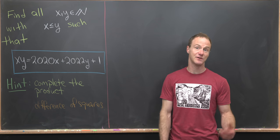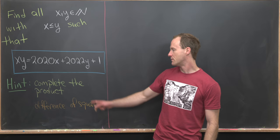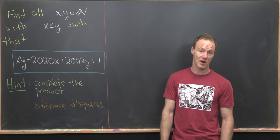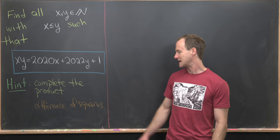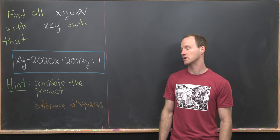Now, I've got a couple hints if you guys want to give this a go on your own. My first hint would be to complete the product. So that's the trick we used in the previous problem. And then my second hint would be to look for a difference of squares.